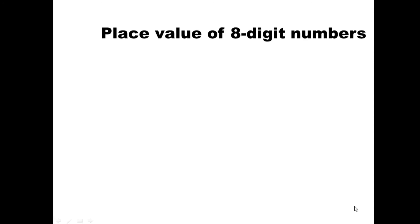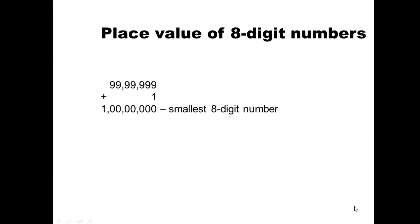Next, let us understand 8-digit numbers. We know the place values up to 7-digit numbers. The largest 7-digit number is 99,99,999. Now, if we add 1 to this, we get 1 crore. 1 crore is an 8-digit number and it is also the smallest 8-digit number, because 8-digit numbers start from 1 crore.